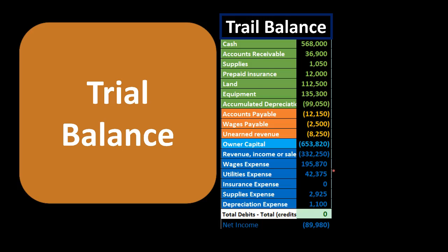Therefore, we can simply sum up the cells — revenue, and each expense — to get net income of $89,980. That's one of the benefits of using negative numbers to represent credits within a trial balance.